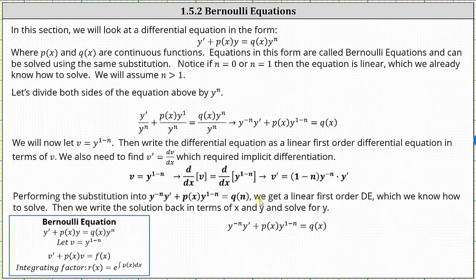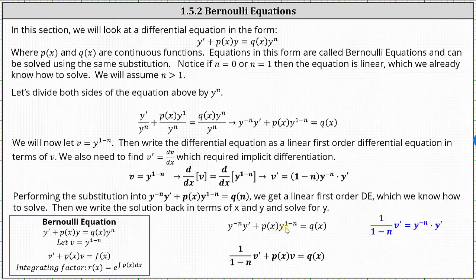Now I'll perform substitution into the equation. Using the equation for v prime, notice y to the power of negative n times y prime is equal to v prime divided by the quantity one minus n, or one divided by the quantity one minus n times v prime. Then we know that y to the power of one minus n is equal to v. Notice now we do have a linear first order differential equation. Recall that one divided by the quantity one minus n is just a constant. The next step would be to solve this differential equation using an integrating factor.